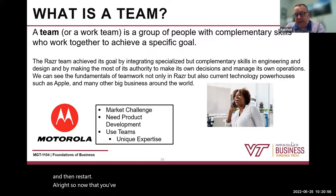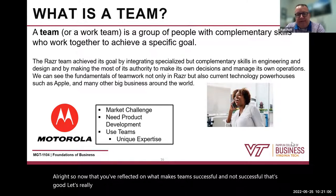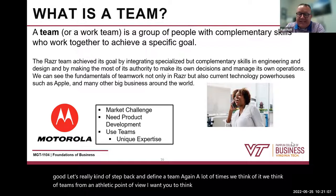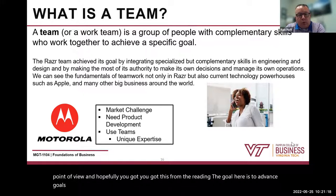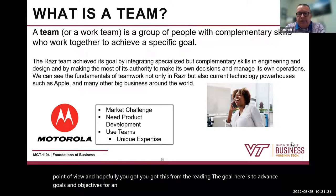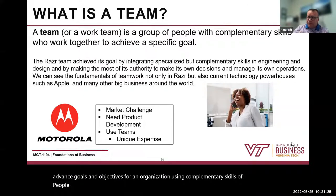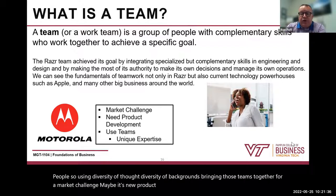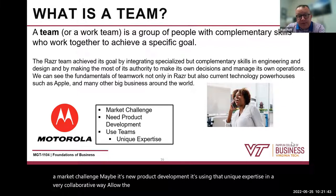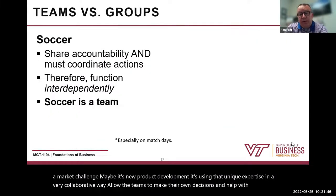Now that you've reflected on what makes teams successful and not successful, let's step back and define a team. A lot of times we think of teams from an athletic point of view — I want you to think of it from a business organizational point of view. The goal is to advance the goals and objectives of an organization using complementary skills of people — using diversity of thought and diversity of backgrounds, bringing teams together for a market challenge, maybe new product development, using that unique expertise in a very collaborative way, allowing teams to make their own decisions and help with operations.